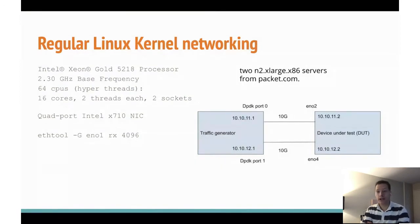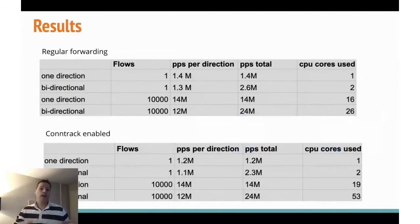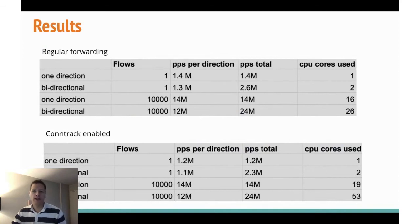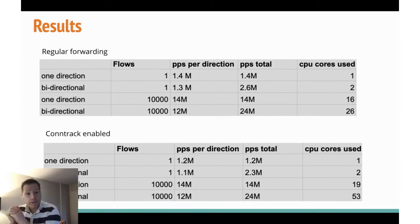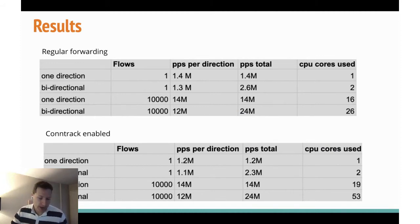Now that we have a good idea of what we're testing, let's take a look at some of the results. There's a lot of data here. The best thing to look at is the first table — the top table — and then the line that says 'one direction.' Every test, I'm testing many flows and I'm testing a single flow. The single flow performance is important, and I'm going to explain why.